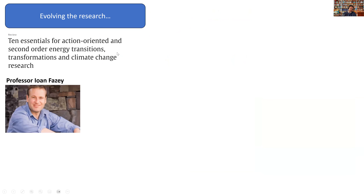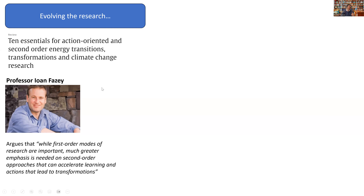Professor Johan Fasey, a climate change professor, wrote a 2018 paper: '10 Essentials for Action-Oriented and Second-Order Energy Transitions.' He was trying to understand how to solve climate change — a big, complex problem, just like implementation, obesity, or poverty. He said 98% of papers just talk about the problem and only a fraction talk about implementing solutions. We need to do what he calls second-order research — moving beyond traditional, objective, outside approaches toward research that can accelerate learning and actions that lead to transformations.